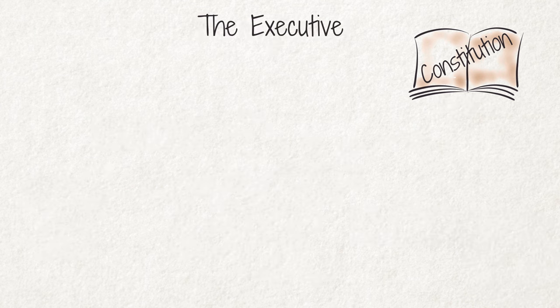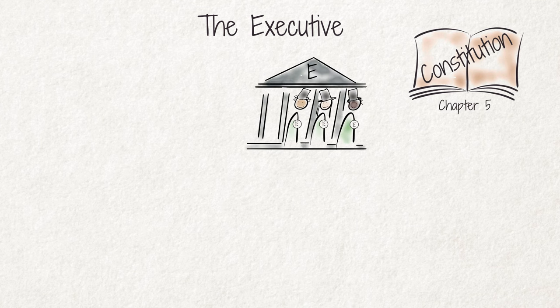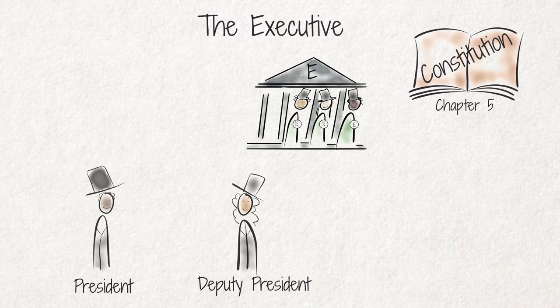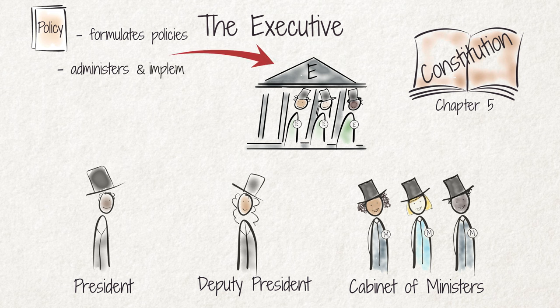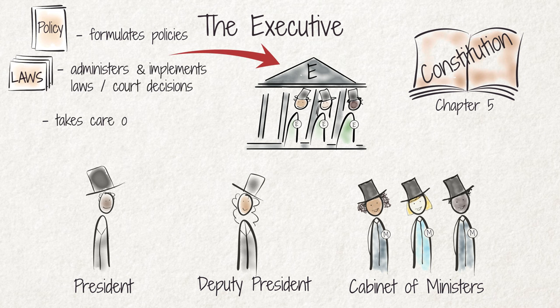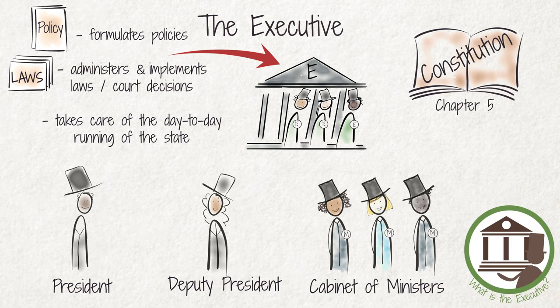The executive branch, as established by Chapter 5, includes the President, the Deputy President, and the Cabinet of Ministers. The executive formulates policies, administers and implements the laws of the legislature, and enforces the decisions of the judiciary. We explain the tasks and responsibilities of the executive in more detail in our video, "What is the executive?"